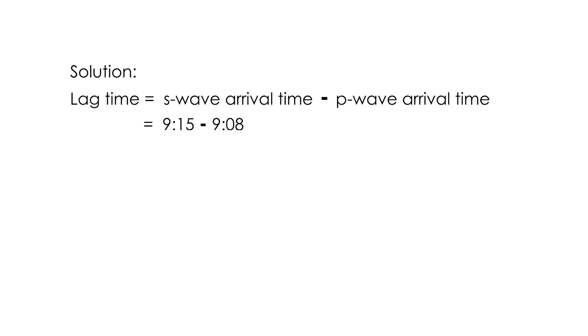To find the lag time, we get the difference between the S wave arrival time minus the P wave arrival time. Lag time equals 9:15 minus 9:08. 9 is in hours, and 15 and 8 are in minutes. We get the difference of hours and minutes: 15 minus 8 is 7 minutes, and 9 minus 9 is 0.